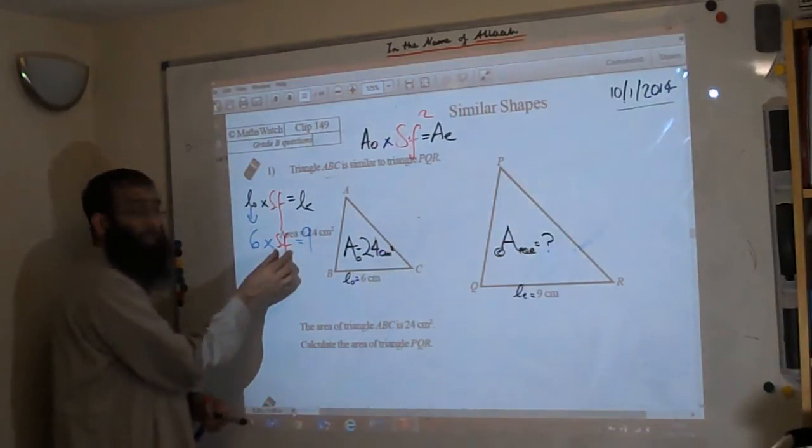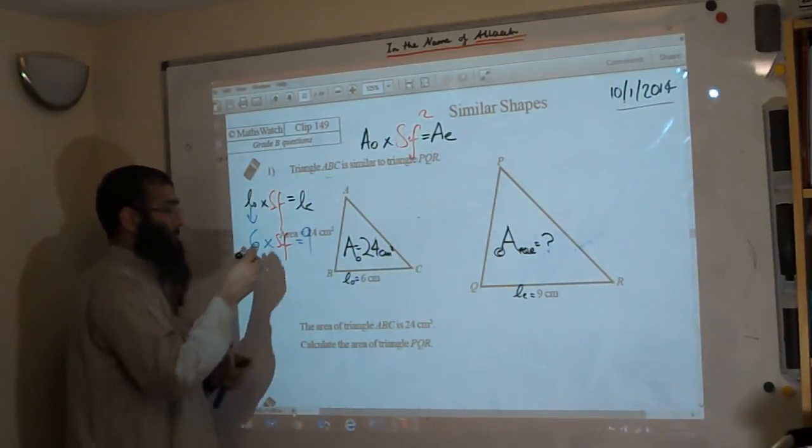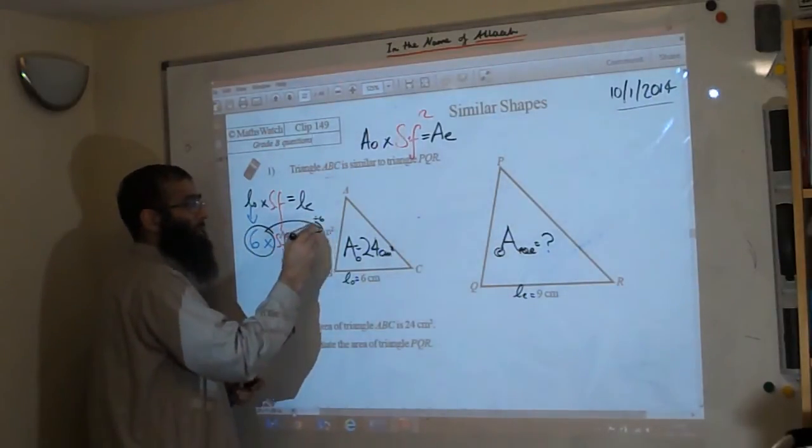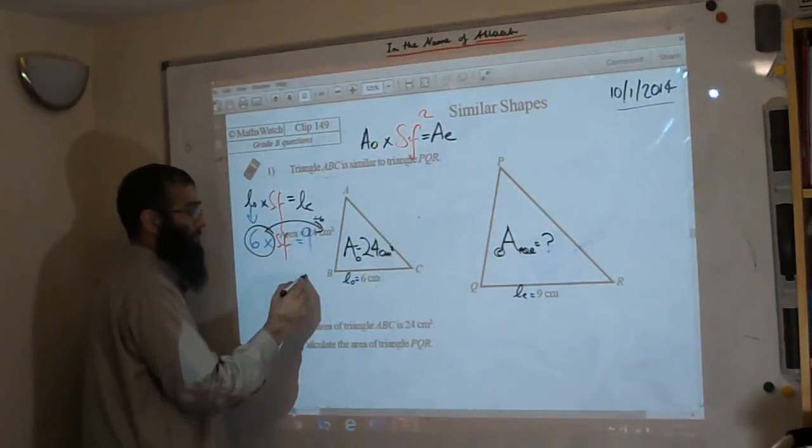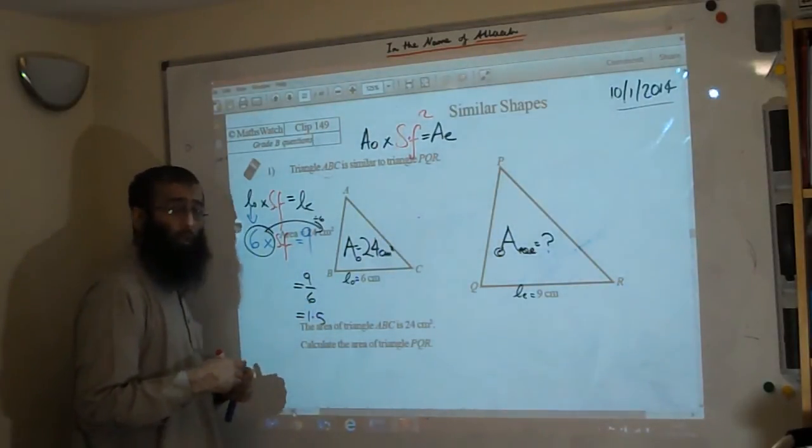Now if you want to work out the scale factor, the scale factor has been multiplied by 6, so the opposite of times by 6 is divided by 6. So you have 9 divided by 6, which is 1 and a half.